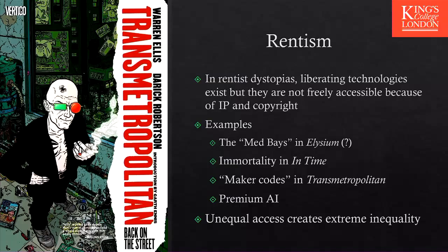In the comic Transmetropolitan, there is a technology similar to the Star Trek replicator — a maker that can produce stuff. But these makers need software, code, blueprints of what they want to replicate. Let's say a chicken: you need the code so the maker produces a roast chicken, but the blueprints for the chicken are copyrighted. So you cannot have a chicken without paying for it. And then there's premium AI — you can already see it in ChatGPT: there's a premium version you pay for, and a free one. The premium version is better. If you write your essay using the premium version, you get better marks, generating inequality.